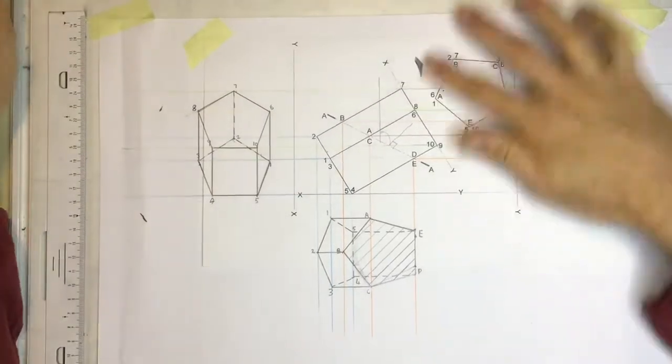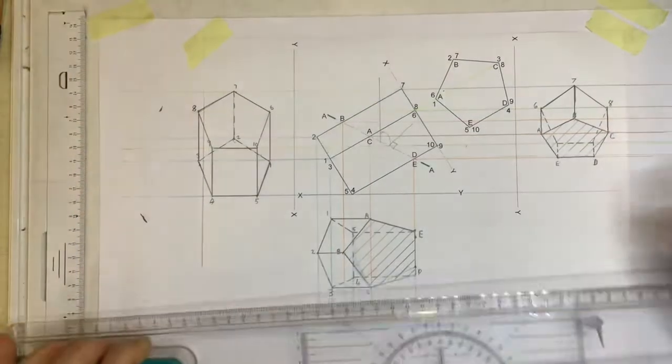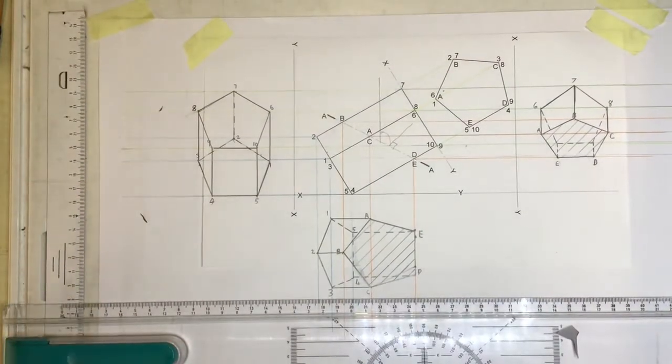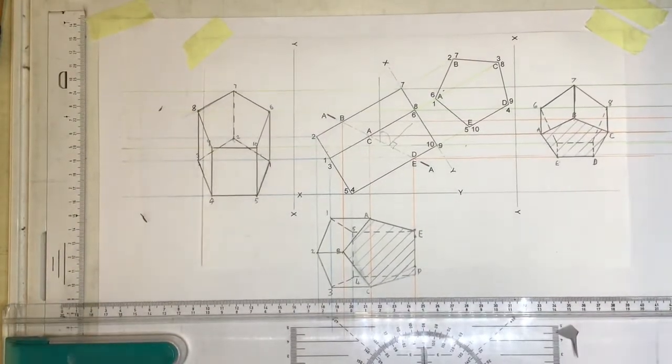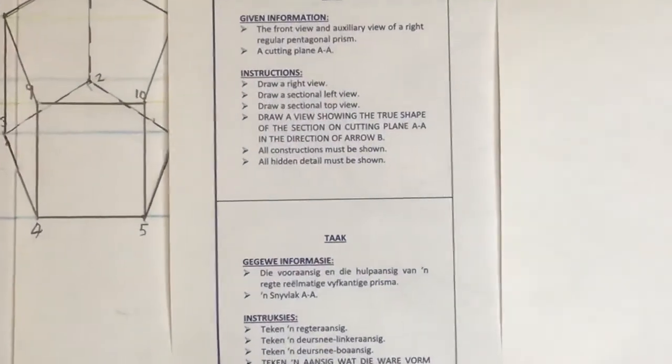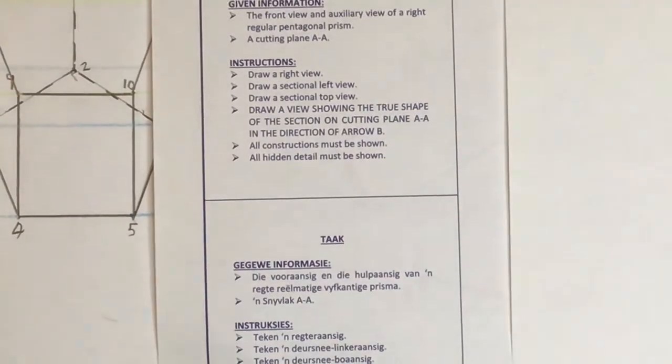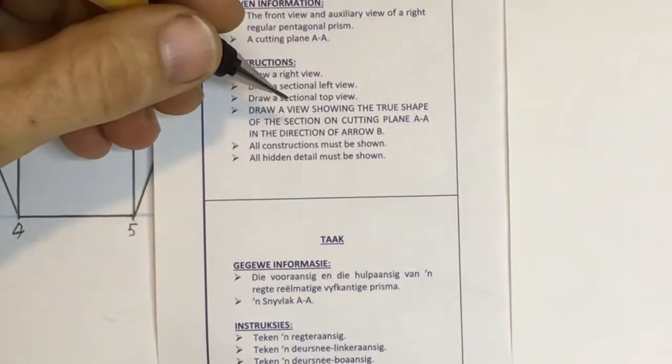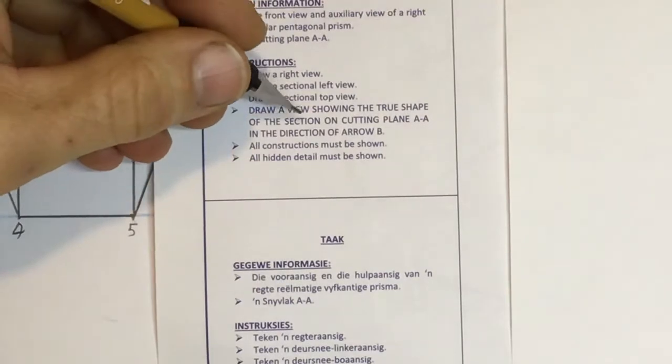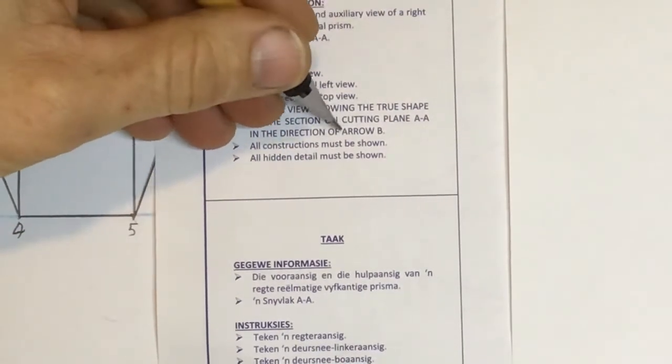Right, the last video in this series is for us to look at how to get the true shape of the cutting plane. Now in the question, they've asked you to do something very special. They are not just asking you to draw the true shape of the cutting plane, they are asking you to draw the true shape of the cutting plane in the direction of B, in the direction of arrow B.